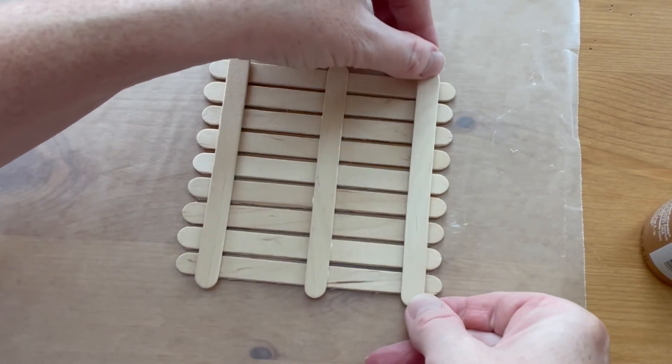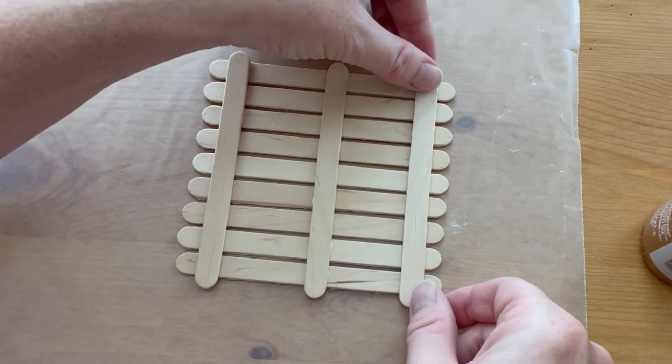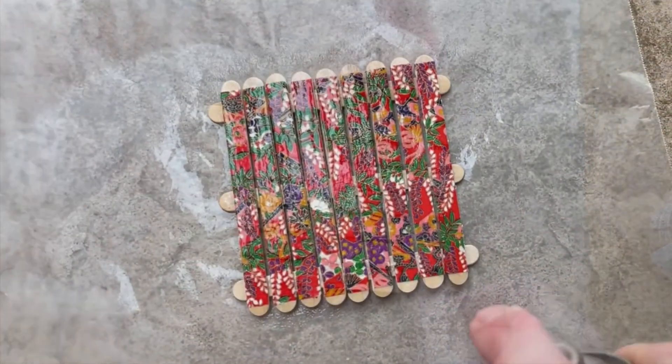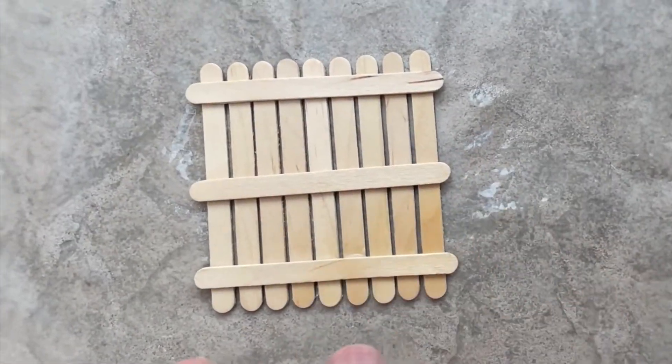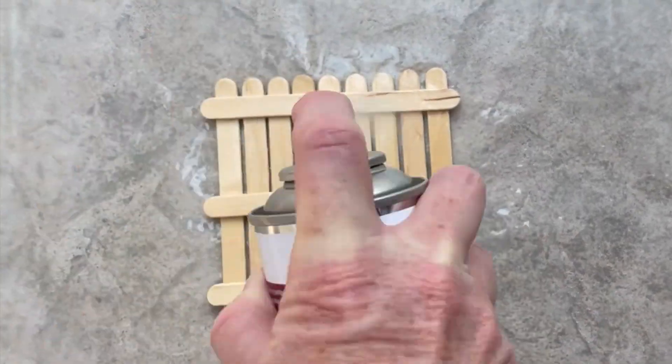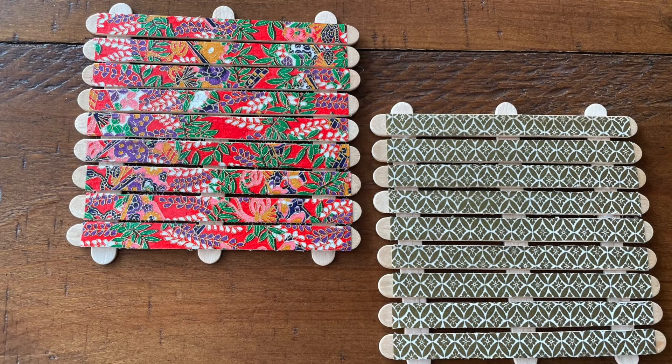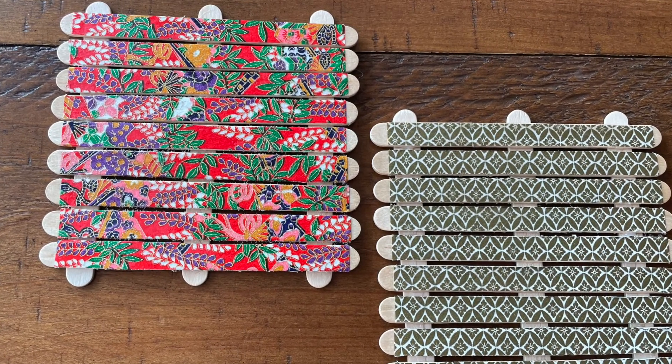Let the glue dry before you move on to the next step. Take the coaster outside and on a protective surface, varnish both sides according to the directions on the can. Once the varnish is completely dry, you're ready to give them as a gift. I've got lots of different craft and gift ideas on my channel.